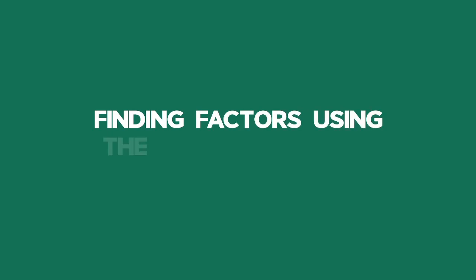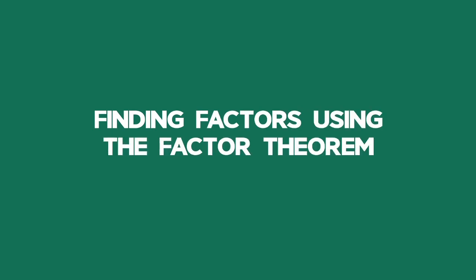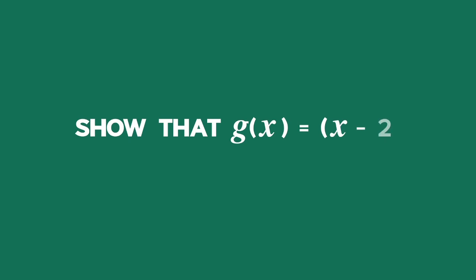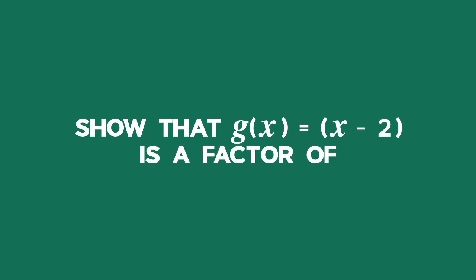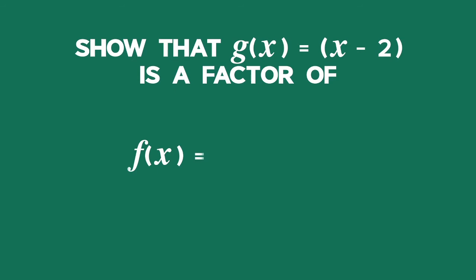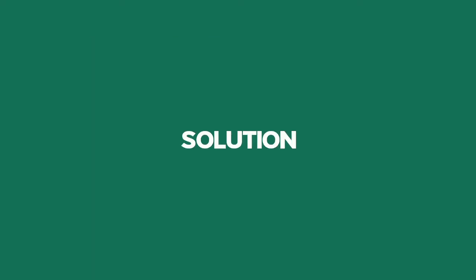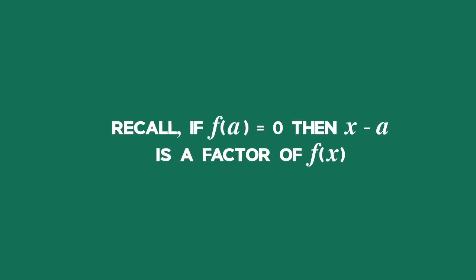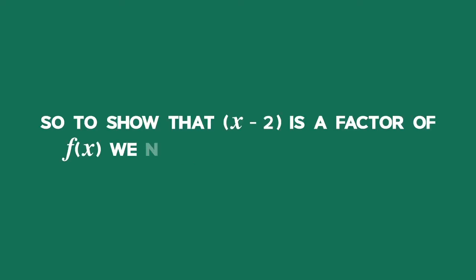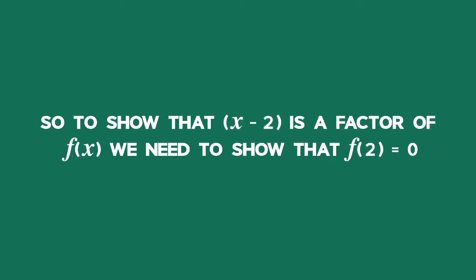Example 2: Finding factors using the factor theorem. Show that g of x equals x minus 2 is a factor of f of x equals x cubed minus 5 times x plus 2. Recall: if f of a equals 0, then x minus a is a factor of f of x. So to show that x minus 2 is a factor of f of x, we need to show that f of 2 equals 0.